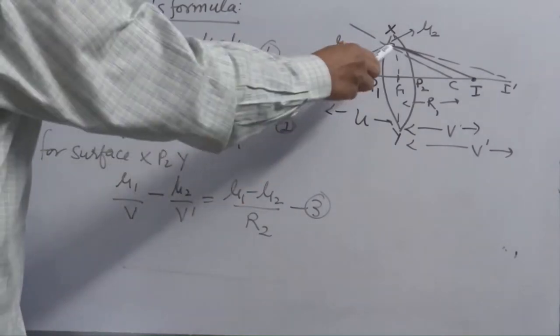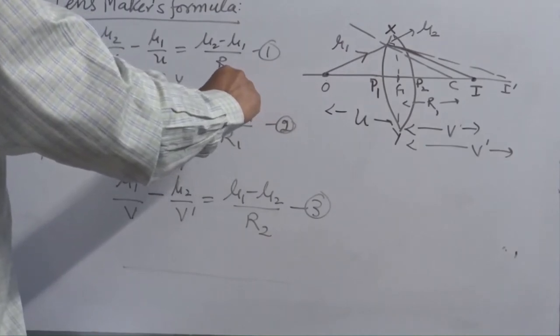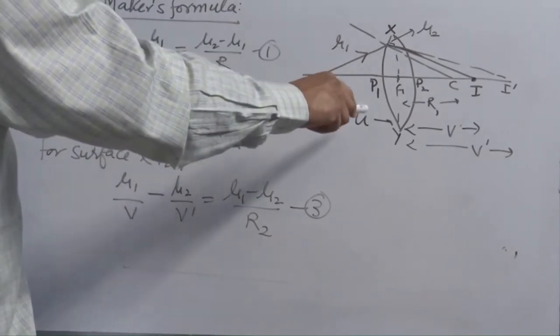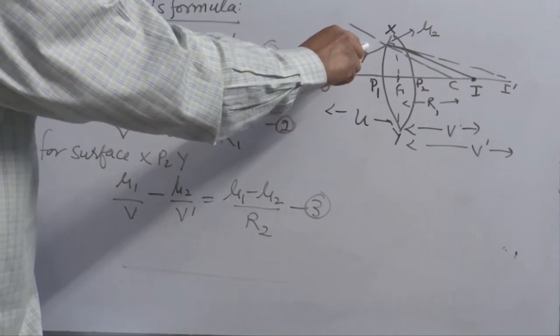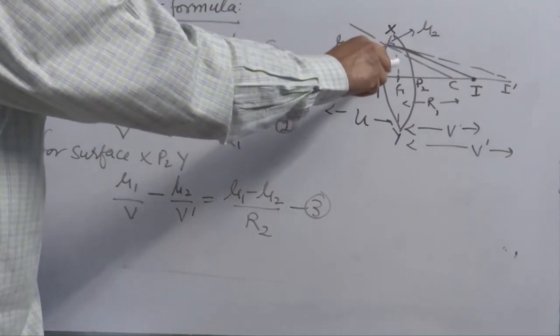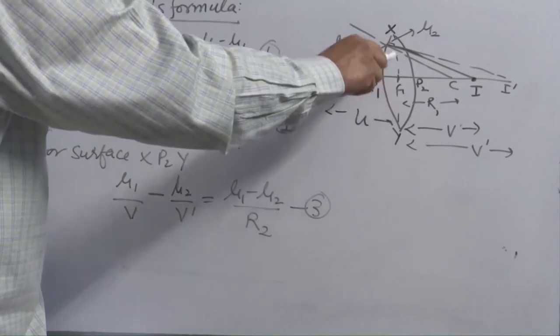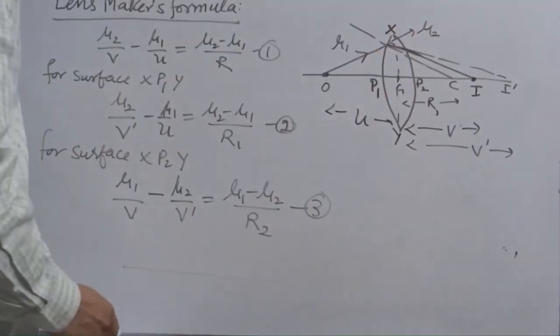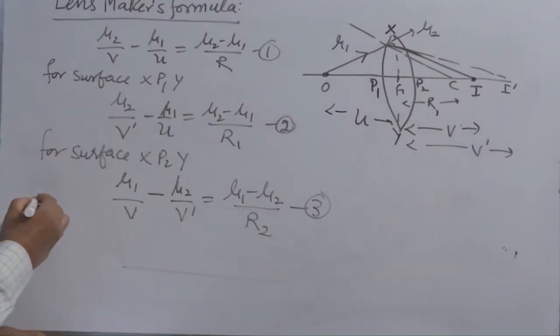But why mu1 is replaced by mu2 and mu2 is replaced by mu1? Because for this surface, all conditions are same as we have derived in case of spherical surface. Ray of light is travelling from rarer to denser. But in case of the second half, the ray of light travels from denser to rarer. So when you move from A mu W, as we know that A mu W is reciprocal to W mu A, that's why everything is interchanged. Now, what you have to do? Just add these two relations.